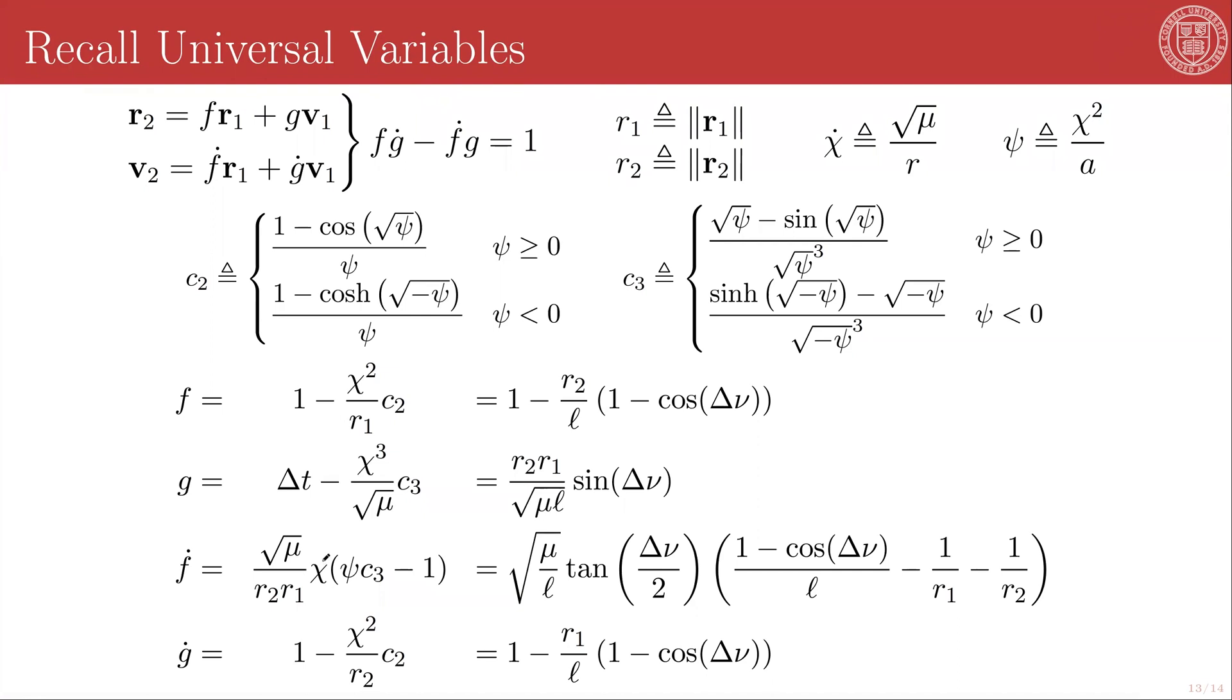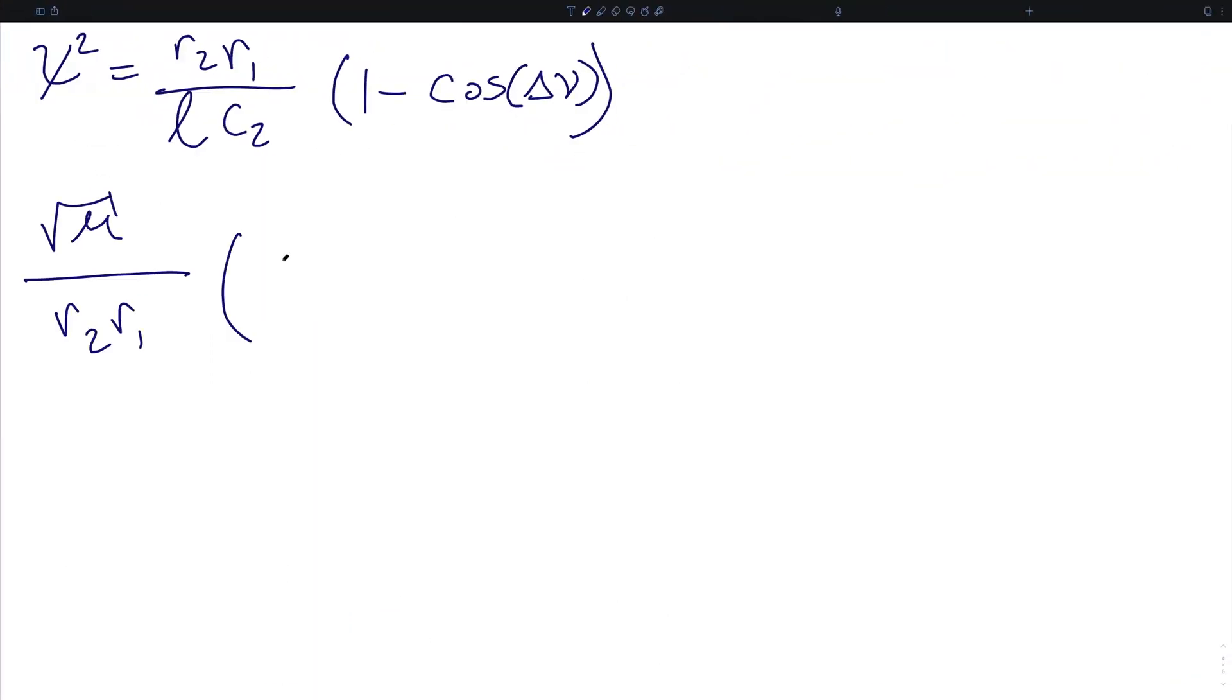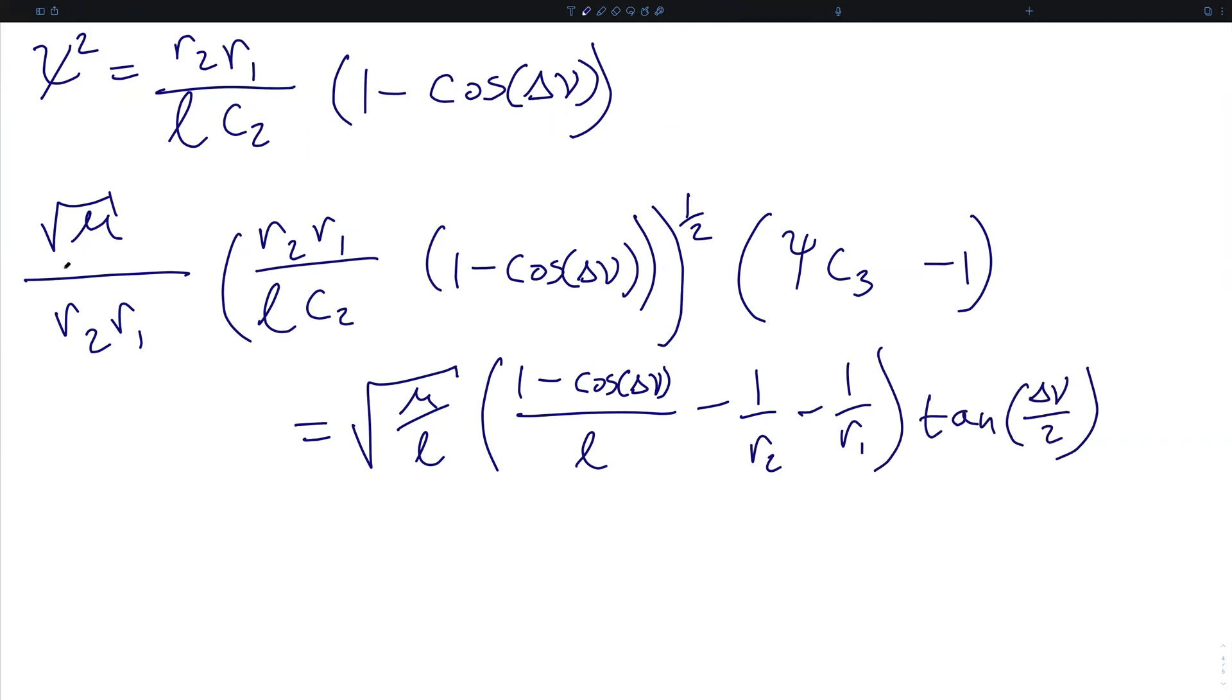So that will give us the square root of mu over r2 r1 times the quantity r2 r1 over lc2 times 1 minus cosine of delta nu, this whole term square rooted, times psi c3 minus 1.